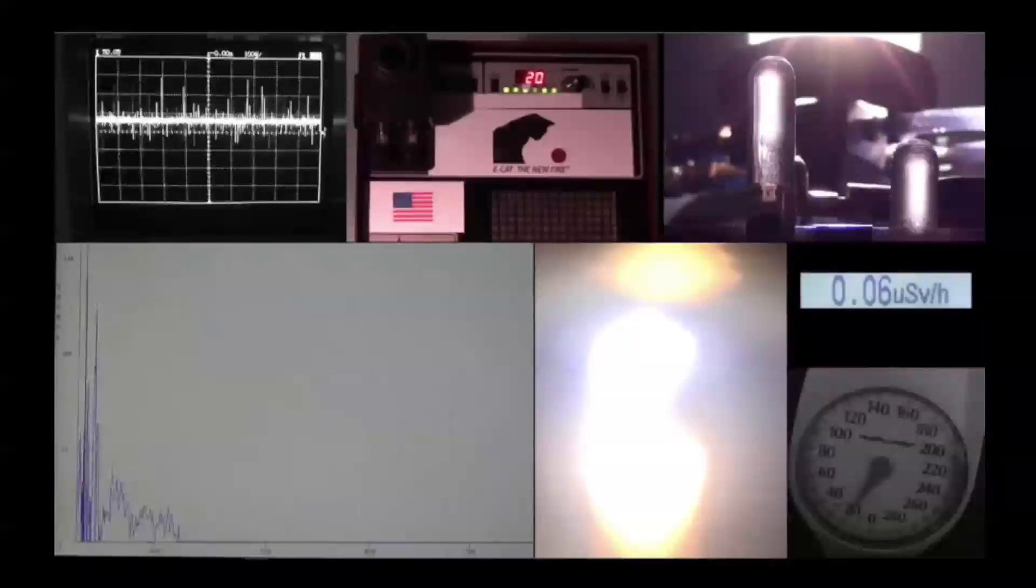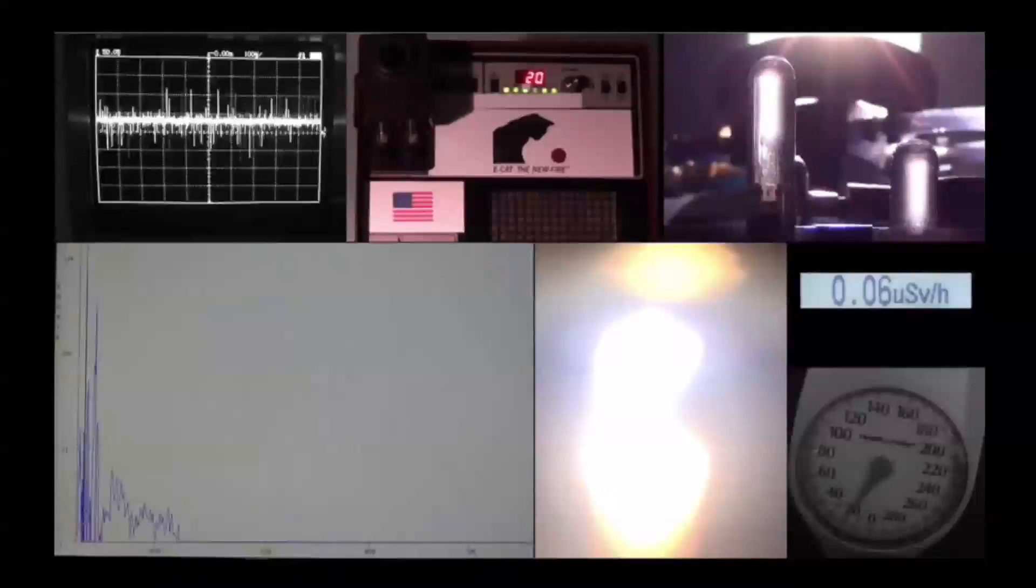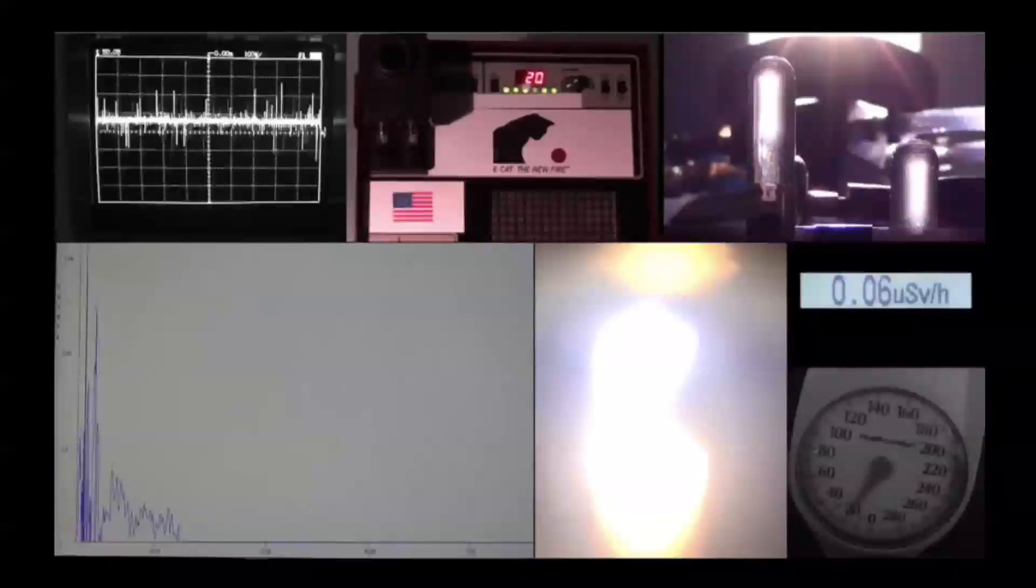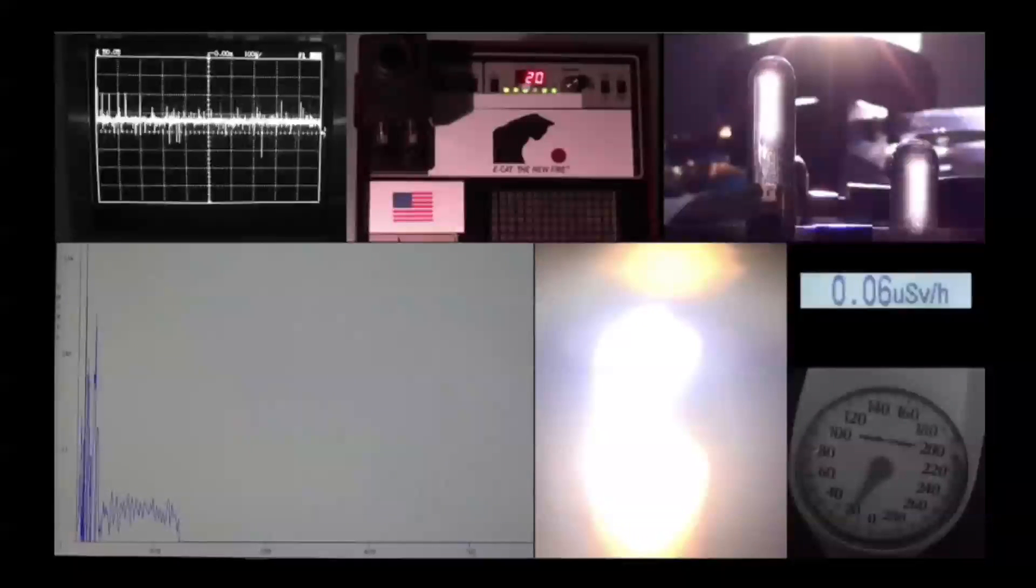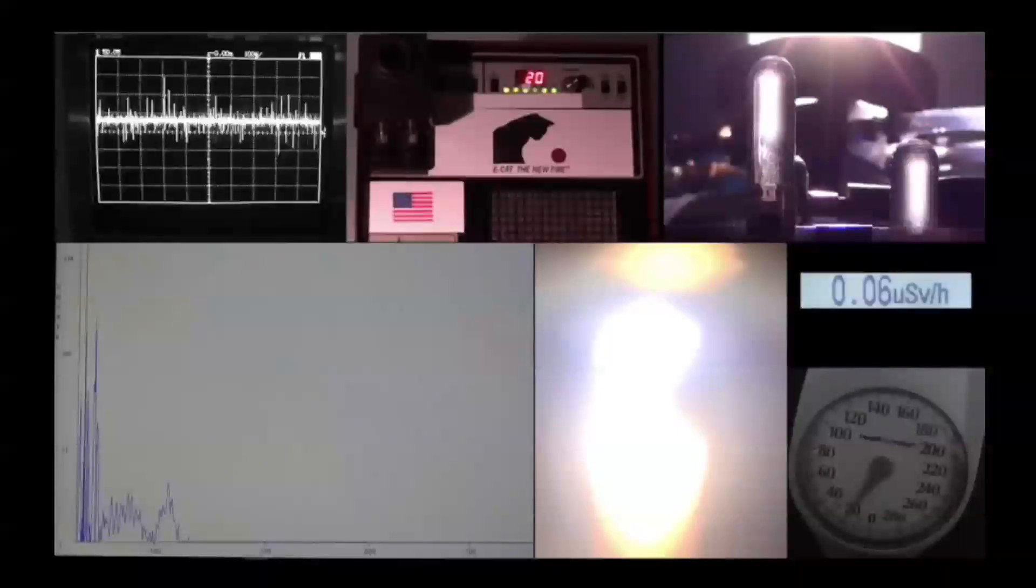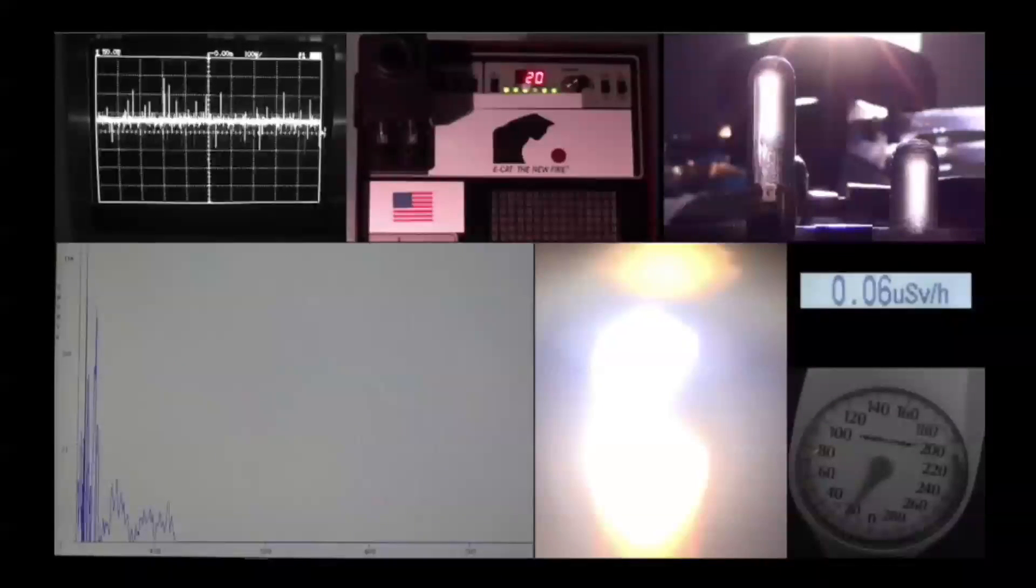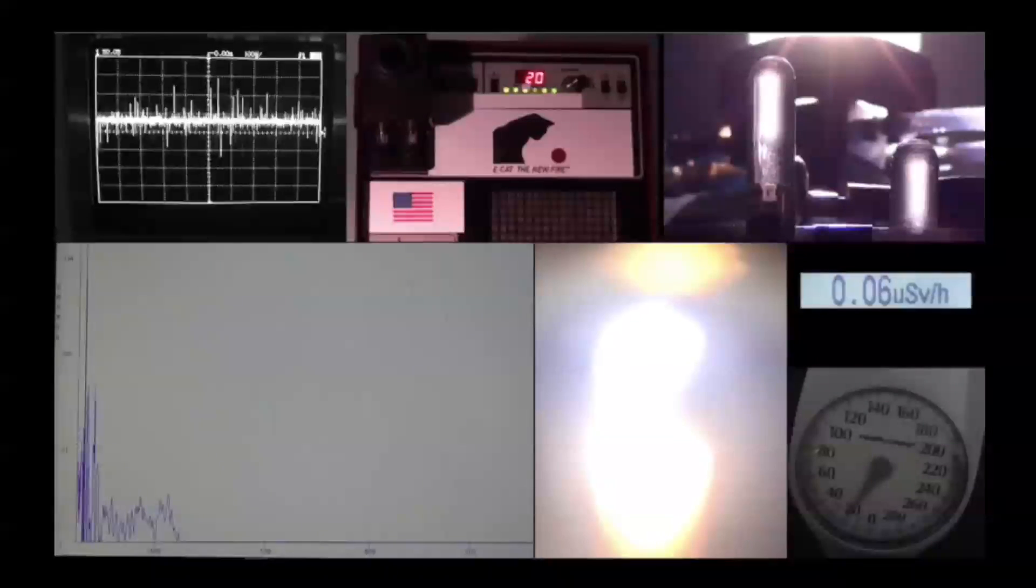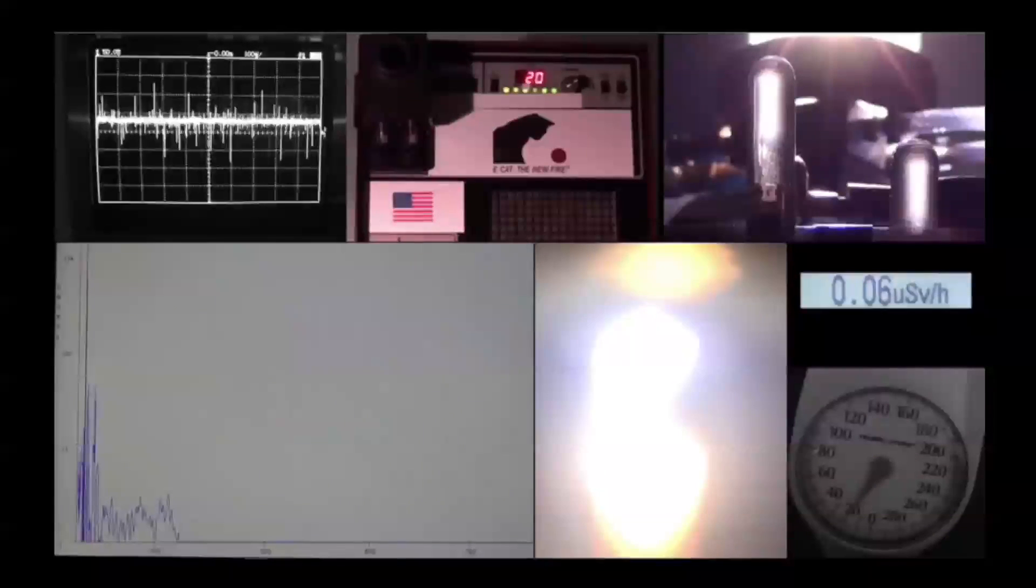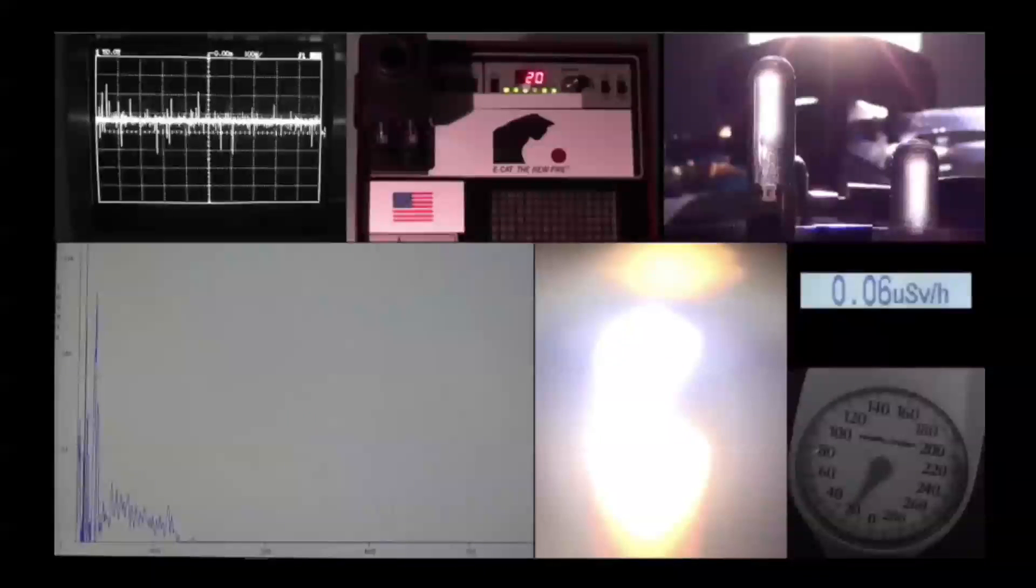The display where you read 20 is an amperometer and voltmeter. The number you read currently by default indicates the amperes of the current that goes to the control panel, which is 20.